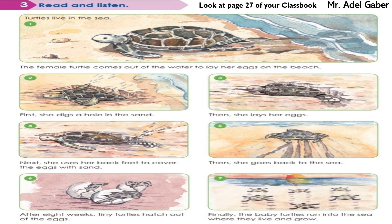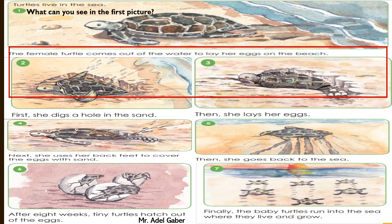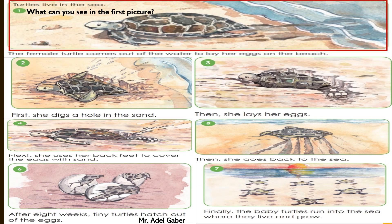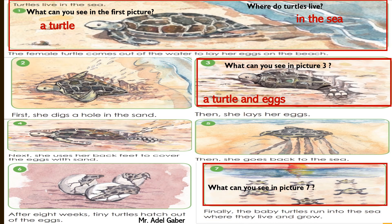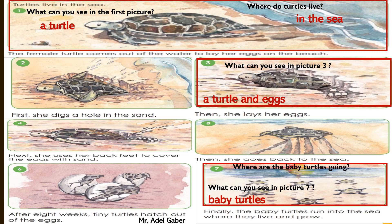Look at these pictures — these are the pictures which Maha has sent to Nina. Look at the first picture: what can you see? Yes, it is a turtle. Where do turtles live? In the sea. Look at picture three: what can you see? Yes, a turtle and eggs. What can you see in picture seven? Baby turtles. Where are the baby turtles going? Yes, they are going to the sea.